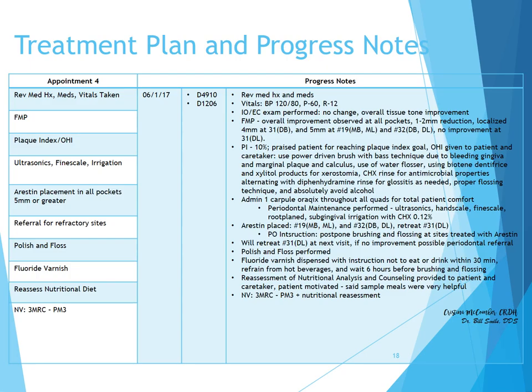At our fourth appointment — a true periodontal maintenance, three months out — we perform full mouth probing. There is an overall tissue tone improvement and a 1 to 2 millimeter reduction at the sites affected at the last visit: localized 4 millimeters at 31 distal buccal, 5 millimeters at 19 mesial buccal and mesial lingual, and 32 distal buccal and distal lingual, with no improvement at number 31 distal lingual. The plaque index is now 10%. We praise the patient for reaching the plaque index goal while continuing to give OHI instructions. We administer Oraqix throughout all quads for total patient comfort and perform periodontal maintenance. Restin is placed at 19 mesial buccal, mesial lingual, number 32 distal buccal and distal lingual, and we retreat at number 31 distal lingual.